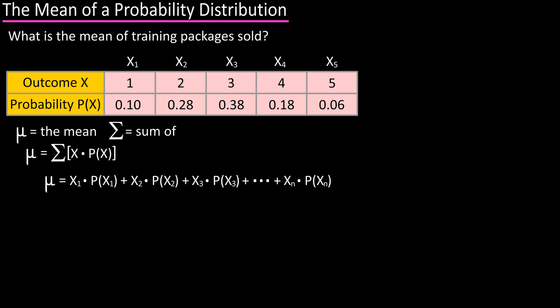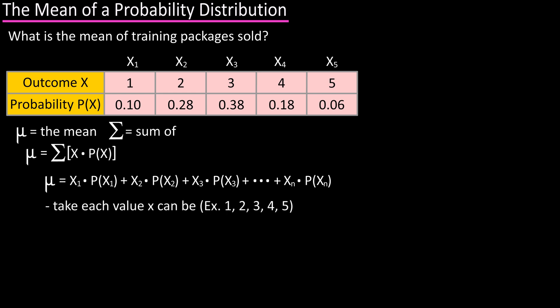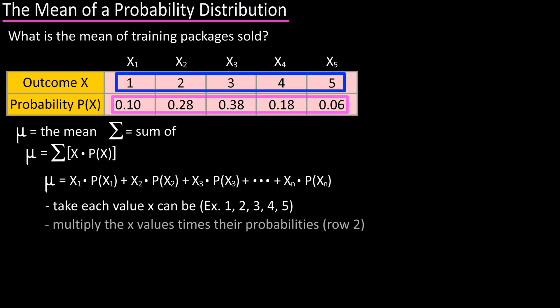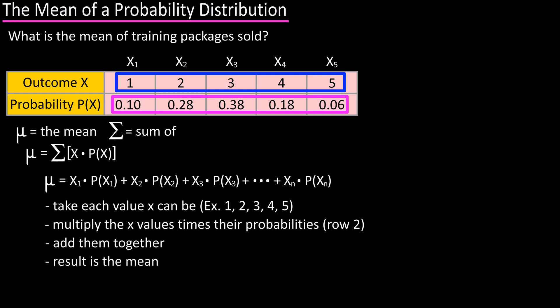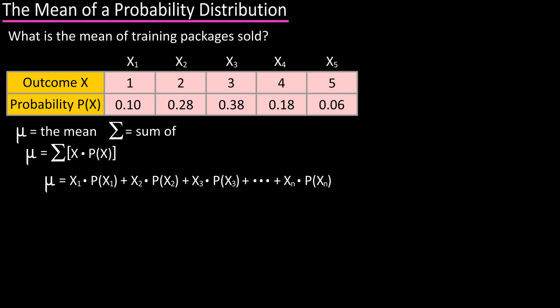In basic terms, what this says is that you take each value that the variable x can assume — so from our table that is 1, 2, 3, 4, or 5 — and multiply each of those values by its probability, which is listed in row 2 of our table, and then add them up, and the result will be the mean.